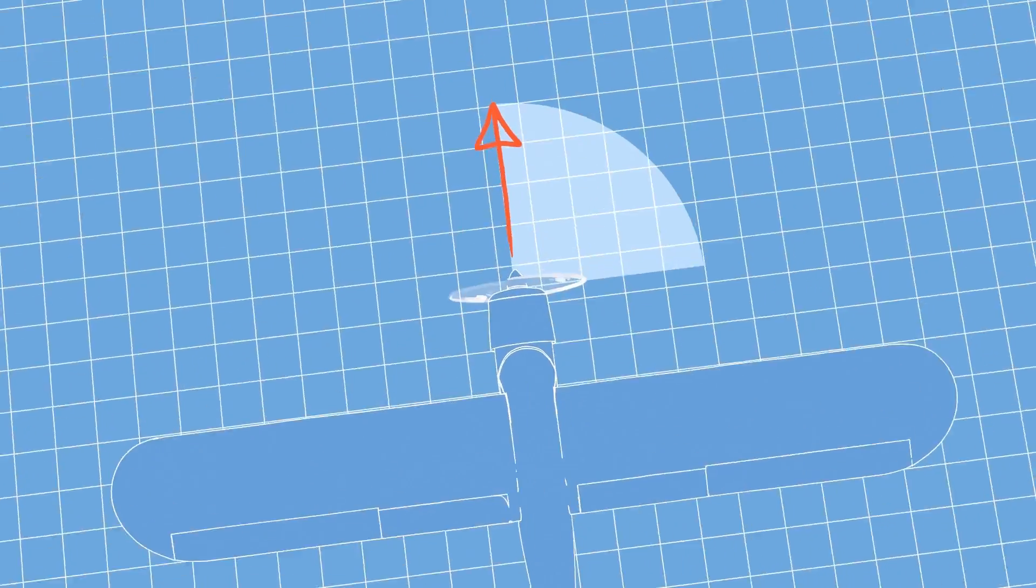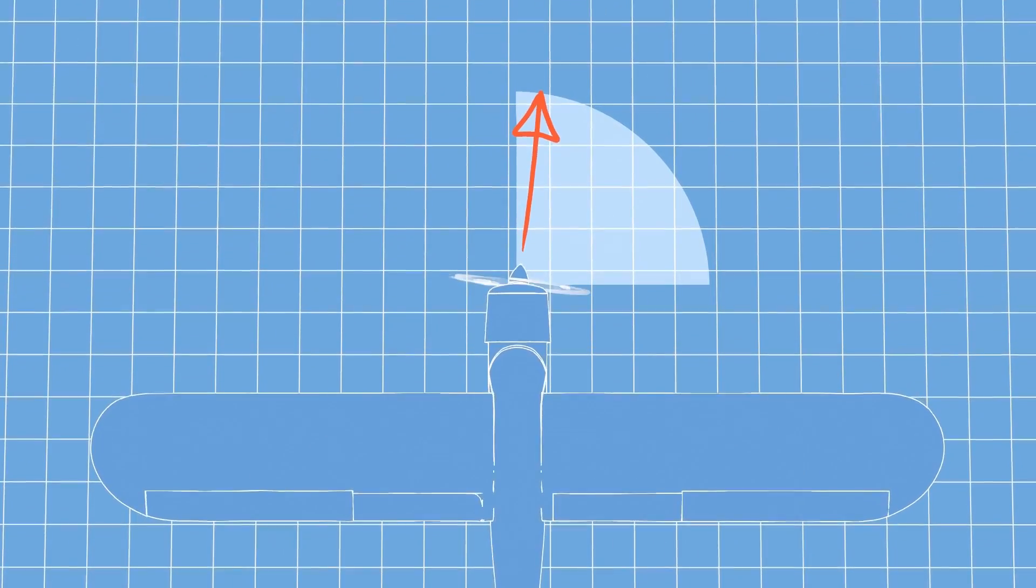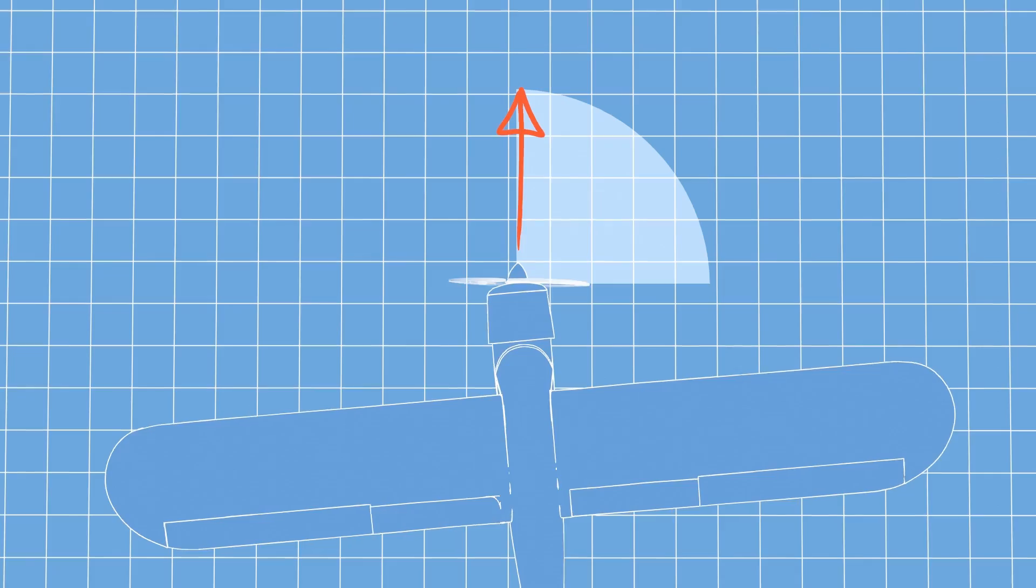On some airplanes the engine is angled to the right to counteract multiple effects that try to turn it to the left.